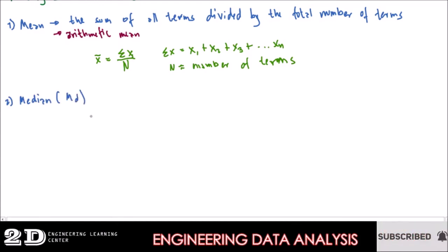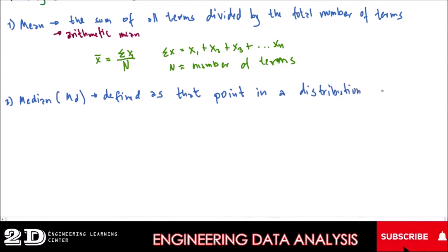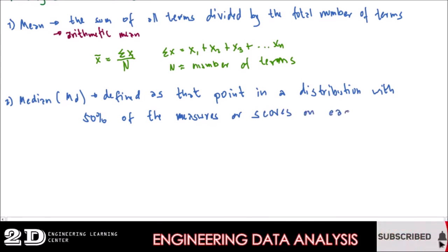So the shortcut for median is Md. It is defined as—let's just check our notes here so we will not miss anything on the definition—defined as just write first as